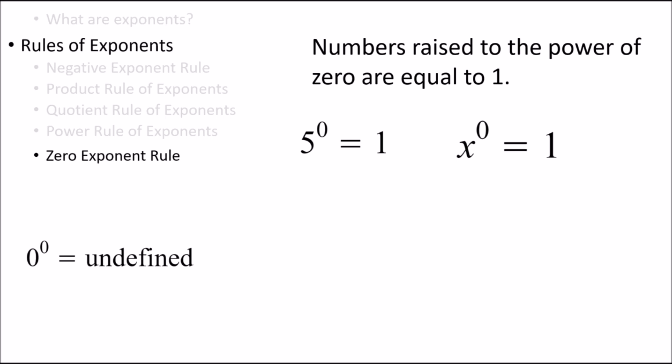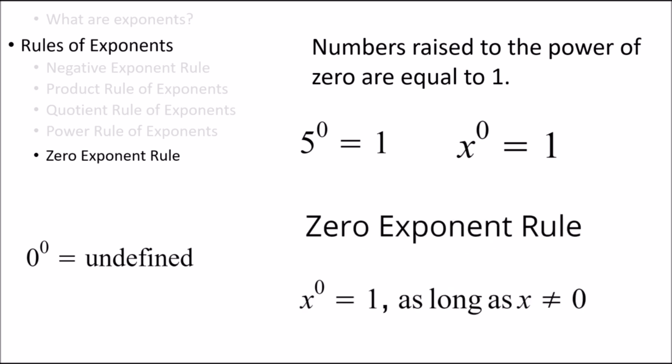0 raised to the power 0 is undefined — it doesn't have a value. Quite often, that's why many questions might tell us that a variable in problems with exponents can't be 0, to make sure that the question has a solution. And if we have zero as an exponent, then the value is 1.